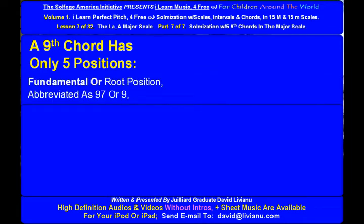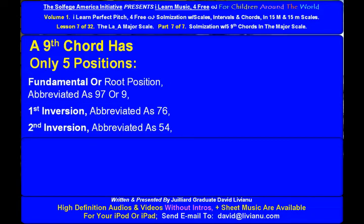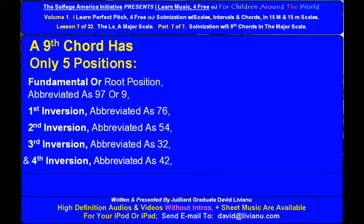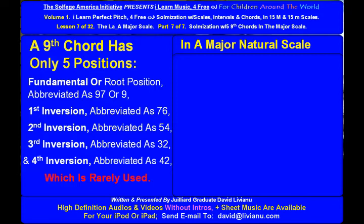A ninth chord has only five positions: fundamental or root position abbreviated as 9-7 or 9, first inversion abbreviated as 7-6, second inversion abbreviated as 5-4, third inversion abbreviated as 3-2, and fourth inversion abbreviated as 4-2, which is rarely used.